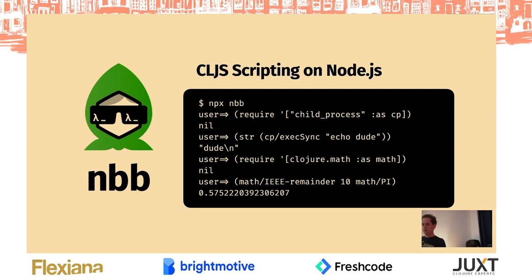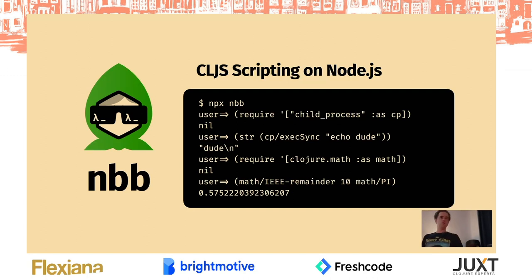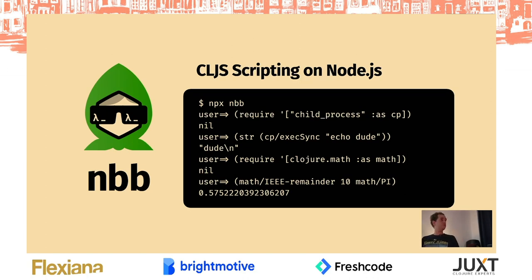You can require Node libraries and call functions from them. NBB also comes with things you'd expect from Clojure core to be available — for example, we have clojure.math, where you can call IEEE-remainder and get a number. That just works.